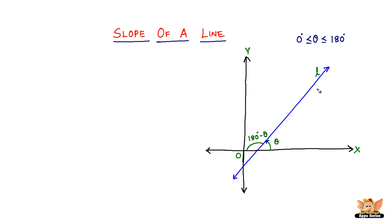The two key points to consider: when line L is inclined, it has inclination theta. When it becomes parallel to the X-axis, the inclination becomes zero. When it coincides with the Y-axis, it makes an angle of 90 degrees with the X-axis. This is the startup to the whole definition of the slope of a line.